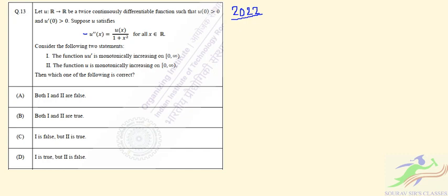Let us start with the first statement: whether the function u·u' is monotonically increasing. To check this on the particular interval, we need to find the derivative of this function and verify it is greater than 0. So we compute d/dx of (u·u'). We will get u'² plus u·u''. Since u''(x) = u(x)/(1 + x²), we can rewrite this as u²/(1 + x²) plus u'².